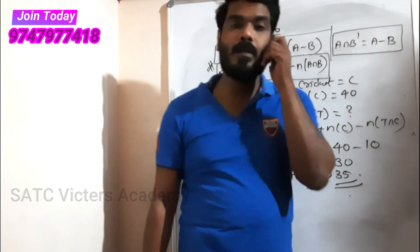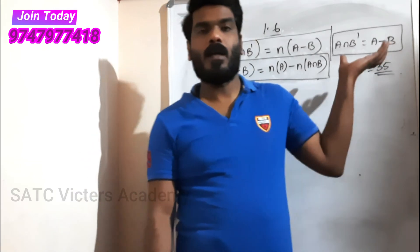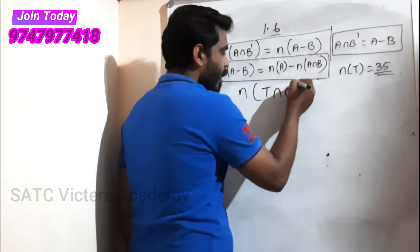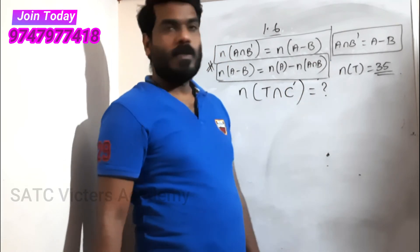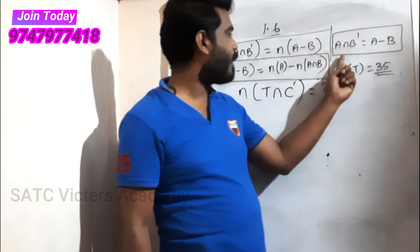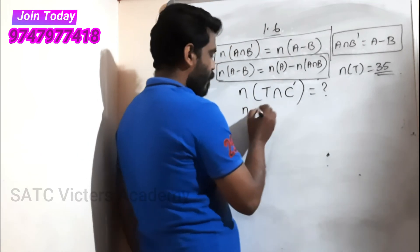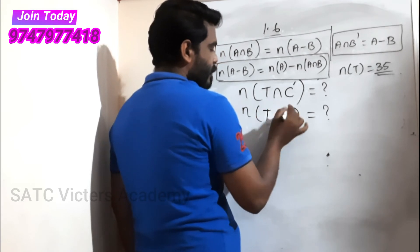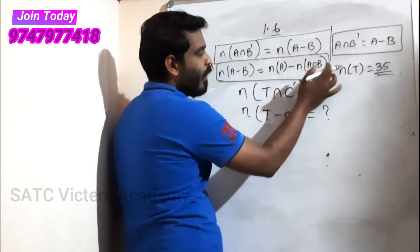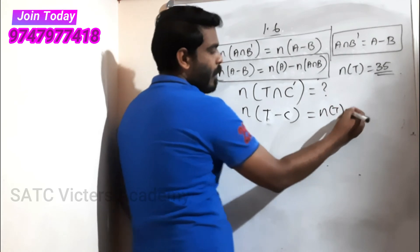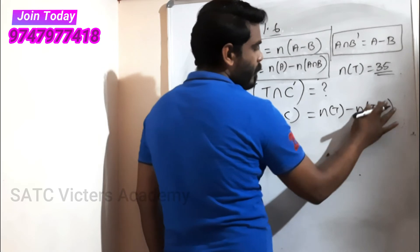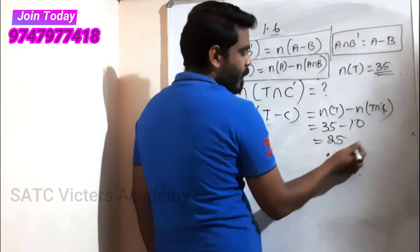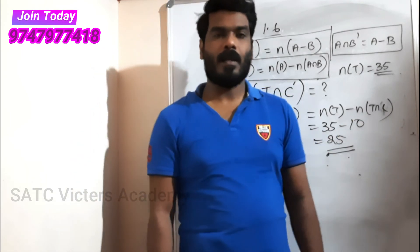So the number of people who like tennis only, not cricket, is 25. We used the formula n(A - B) = n(A) - n(A∩B), which in this case gives n(T - C) = n(T) - n(T∩C) = 35 - 10 = 25. That's the solution for question 7.